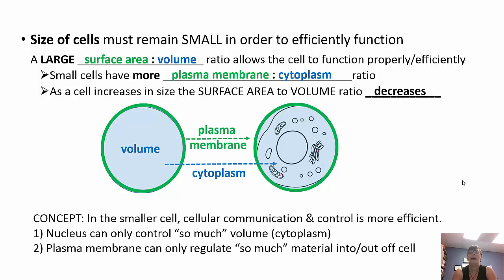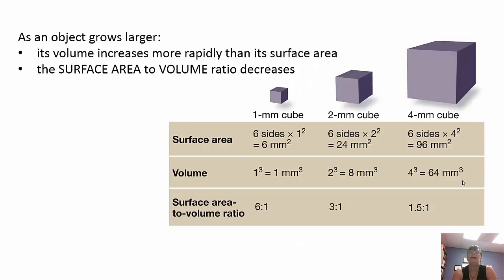In a smaller cell, communication and control is more effective. The nucleus can only control so much cytoplasm, and the plasma membrane can only regulate so much material in and out of the cell. As an object grows larger, its volume increases much more rapidly than its surface area, so the surface area to volume ratio decreases.